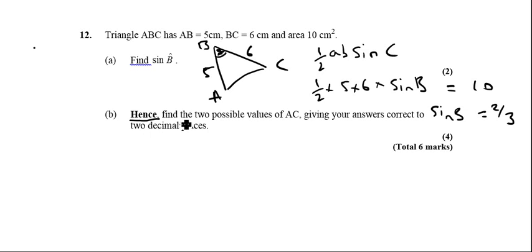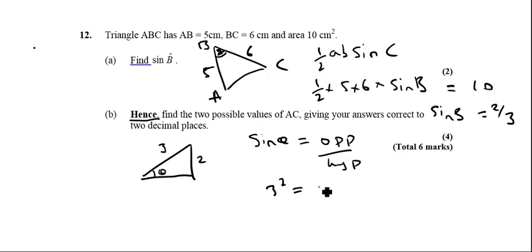The second part says to use that result from the first part. We know that sine B is two thirds, so we do a little sketch of a triangle. Sine equals opposite over hypotenuse, so if this is our theta here, we'd have opposite of 2, hypotenuse of 3. Therefore, to find this missing side here, we would do 3 squared equals 2 squared plus let's call it x squared.